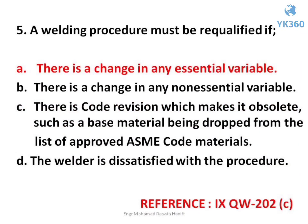Question number 5. A welding procedure must be requalified if — options are: A. There is a change in any essential variable, B. There is a change in any non-essential variable, C. There is a code revision which makes it obsolete, such as a base material being dropped from the list of approved ASME code materials, D. The welder is dissatisfied with the procedure. Answer is option A. There is a change in any essential variable.